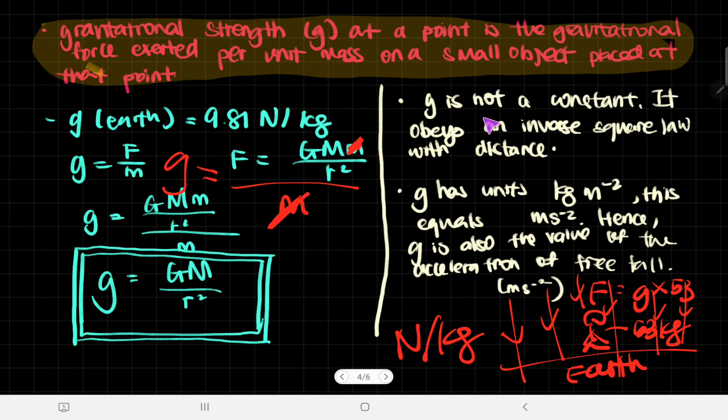A few things to note is that g is not a constant. As I've said before, it will obey an inverse square law with distance. So the further you go away from it, the lower it becomes and actually becomes lower by a square of how much you've gone further away with distance.